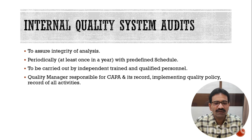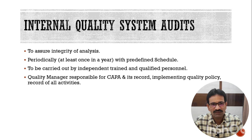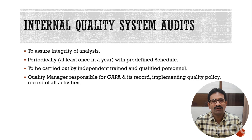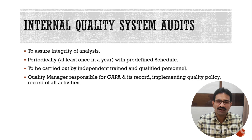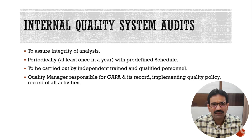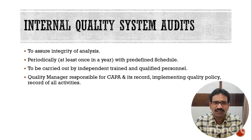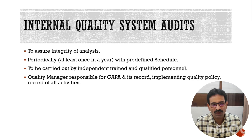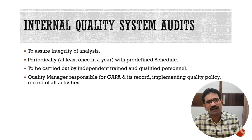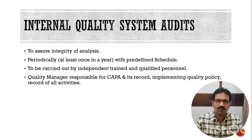Regarding internal quality system audits, Schedule L1 expects that you have to define an internal quality audit frequency — at least once in a year. Quality audits should be conducted by a qualified, knowledgeable, trained person who is independent of your system. The quality manager shall be responsible for corrective and preventive actions, compliance in line with GLP requirements, maintaining records, implementation of quality policy, and records of all activities performed in the lab.